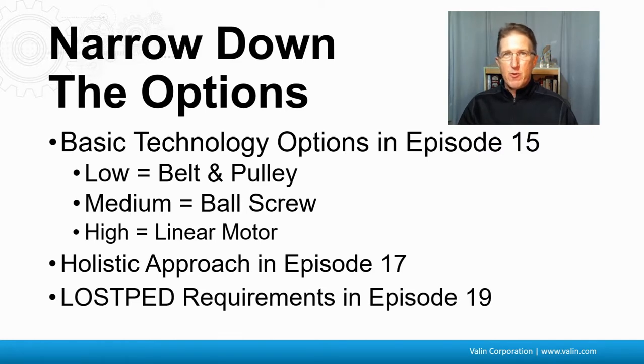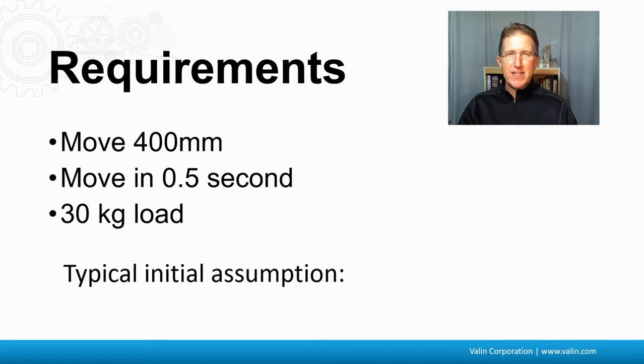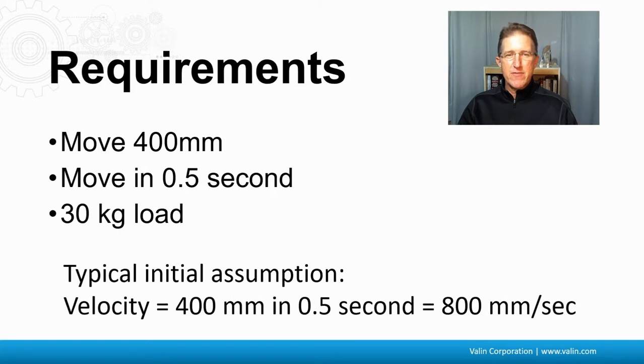And then we need the basic requirements, as we defined in the LOST-PED requirements in episode 19. So let's start with a real basic example. We're given a move profile of 400 millimeters, moving in half a second with a 30 kilogram load. So the typical initial assumption is that is going to be a velocity of 400 millimeters in half a second, which is 800 millimeters per second, right?